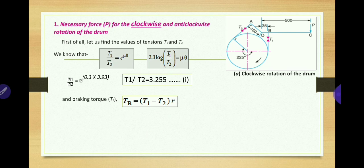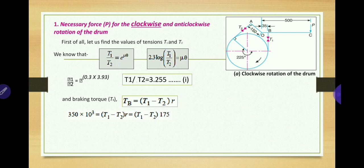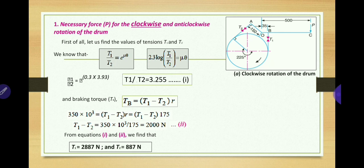For the braking torque: Tb equals T1 minus T2 into R (since band thickness is not given, we use R instead of Re). Substituting the values, T1 minus T2 equals 2000 N — call this equation 2. From equation 2, T1 equals 2000 plus T2. Substitute this into equation 1 to find T2, then substitute T2 back into equation 2 to find T1. Solving equations 1 and 2 gives the values of T1 and T2.